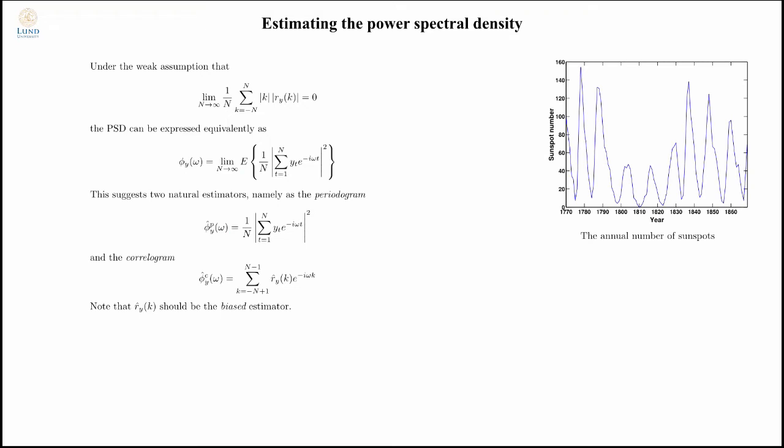This is called the periodogram, invented by Schuster in 1898 to look at the periodicities of the sunspots. The sun has a surface heat of about 6,000 degrees, but will have some regions that are about 4,000 degrees appearing as black spots. Since the sun has for thousands of years been assumed to be something perfect, people have been studying these and counting the number of sunspots. We have measurements going back a very long time ago.